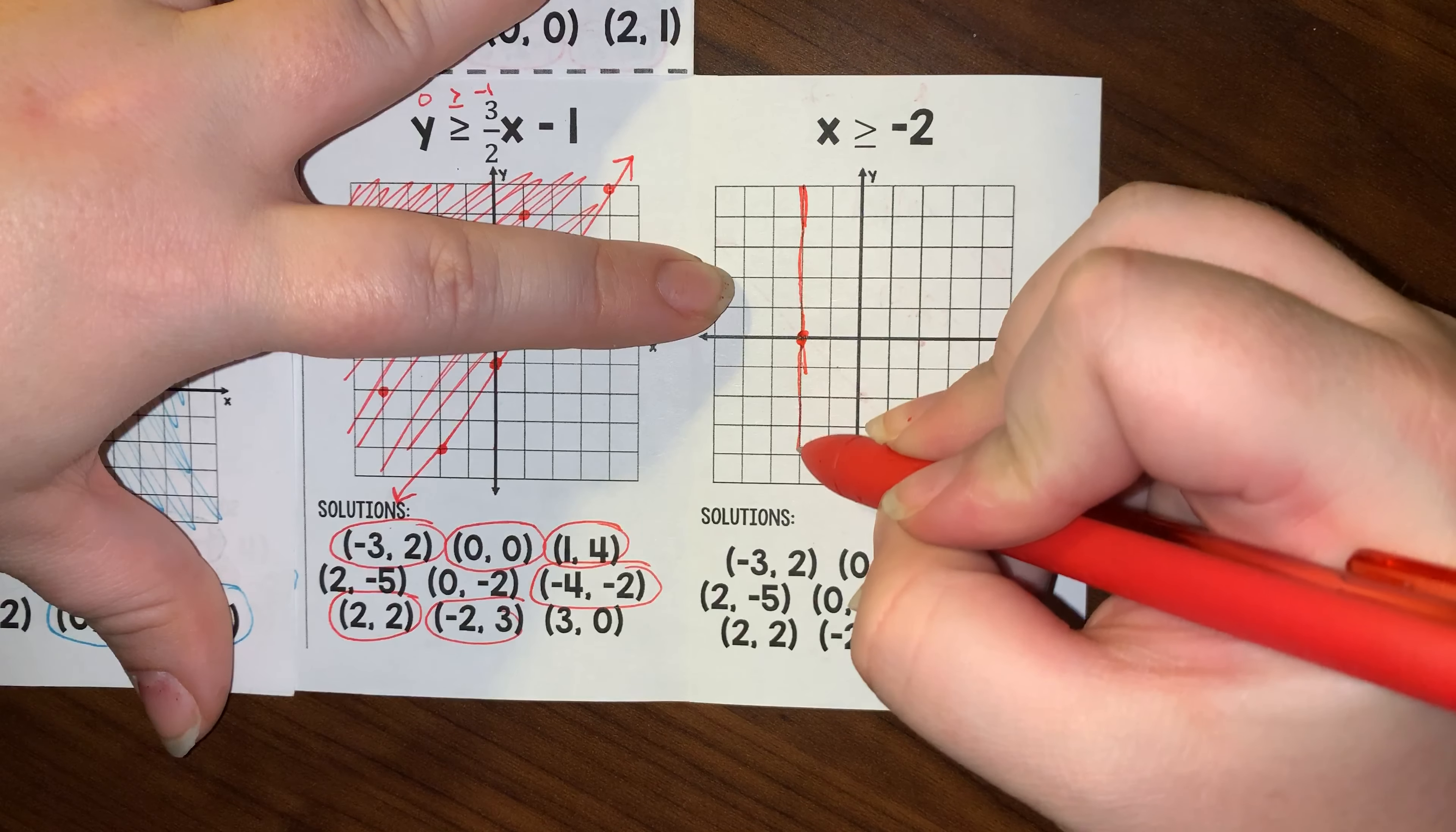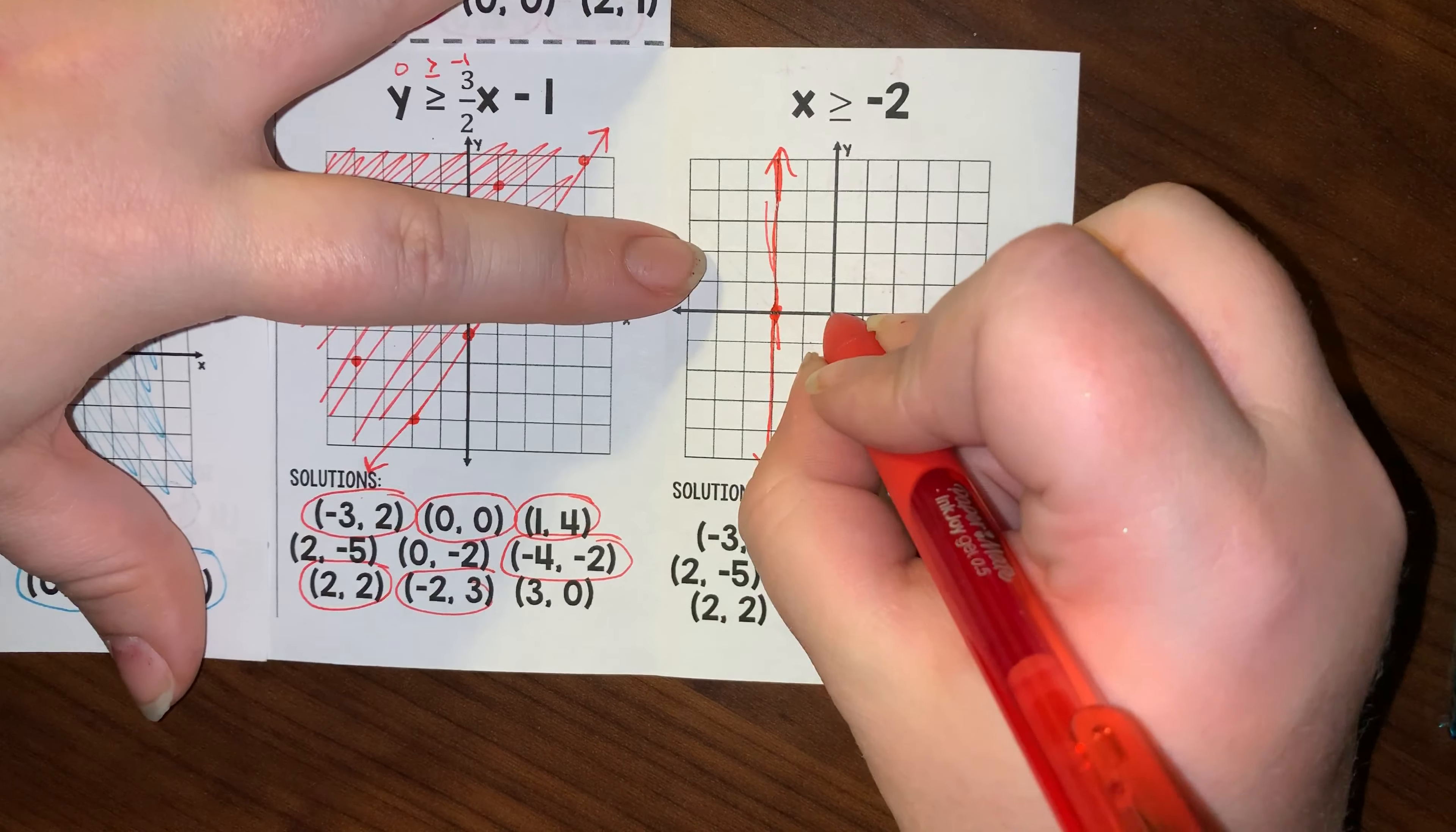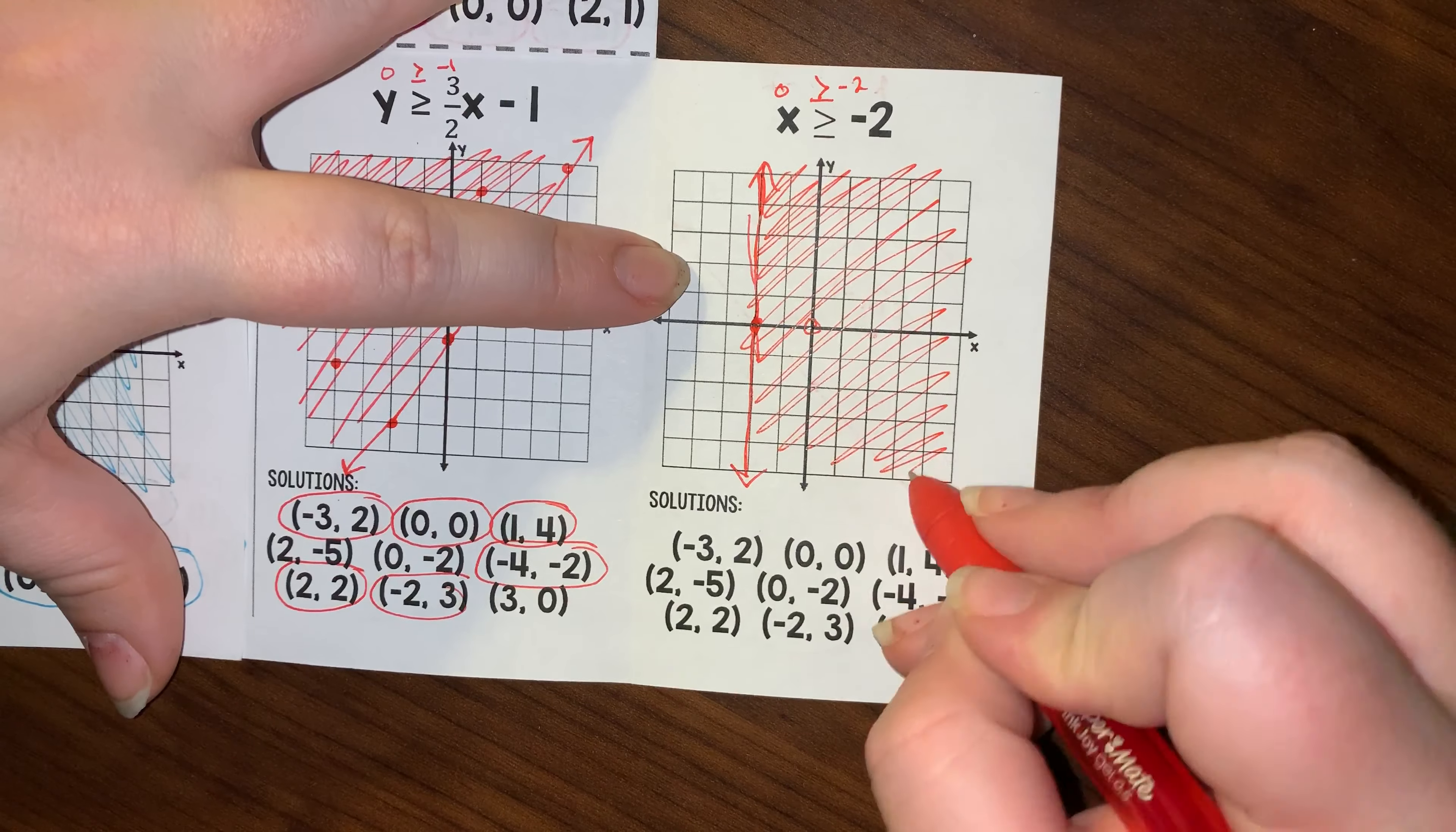So it's an undefined slope, so it's a vertical line. So let's say x was 0, as in the origin. 0 is greater than or equal to negative 2, so we're shading everything to the right of that line.